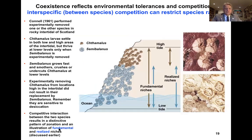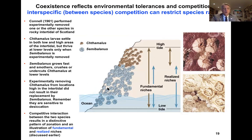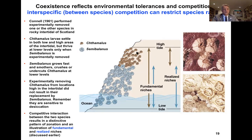Back in 1961, Connell experimentally removed one or the other species from the rocky intertidal in Scotland. Chthamalus larvae settle both in the high and low areas of the intertidal, but they thrive only at the lower levels — only when Semibalanus is removed. So you can get Chthamalus in the lower intertidal when Semibalanus is removed.